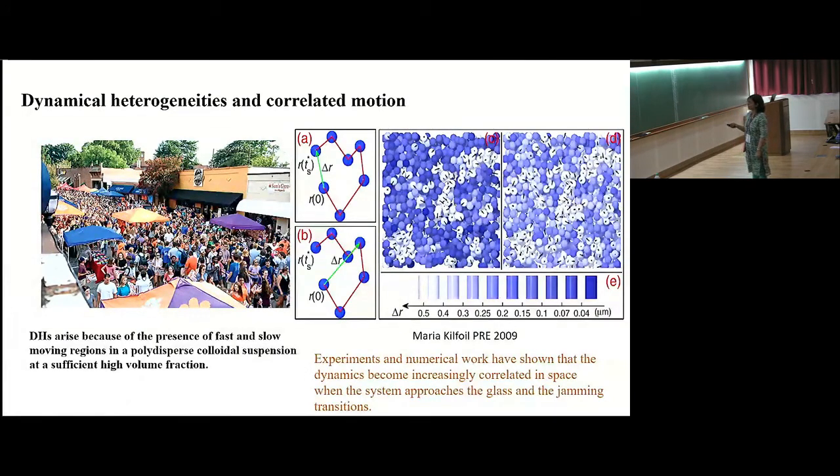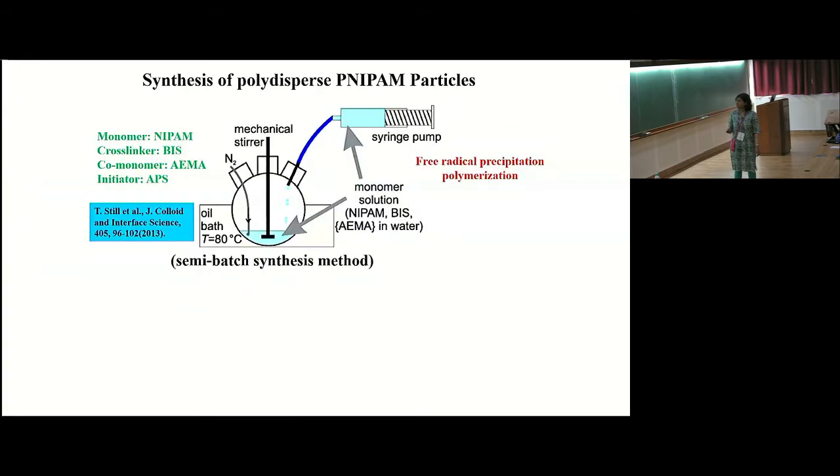And experiments and numerical work have shown that the dynamics of these clusters of particles, these particles become increasingly correlated in space when you approach the jamming transition. So, we wanted to make these particles with a continuous size distribution. So, we had to come up with the following protocol. In a reaction vessel, we carried out this free radical precipitation polymerization reaction where we took a monomer of NIPAM. We used a cross-linker, a core monomer and an initiator so that your polymerization reaction is initiated and it all happens in this reaction vessel.